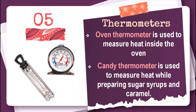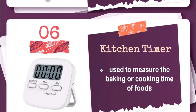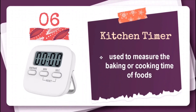Thermometers. Oven thermometer is used to measure heat inside the oven. A candy thermometer is used to measure heat while preparing sugar, syrup, and caramel. A kitchen timer is used to measure the baking or cooking time of foods.